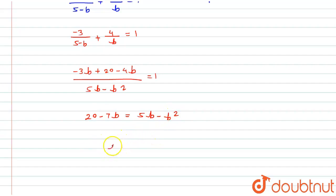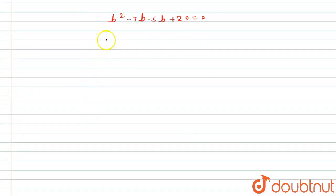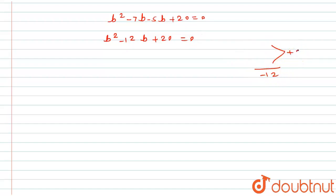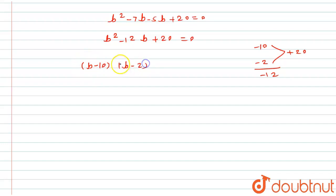Taking all terms to one side: 20 - 7b = 5b - b². Rearranging gives b² - 7b - 5b + 20 = 0, that is b² - 12b + 20 = 0. I need to split -12 such that the product is 20 and the sum is -12, which gives -10 and -2. So factoring: (b - 10)(b - 2) = 0.